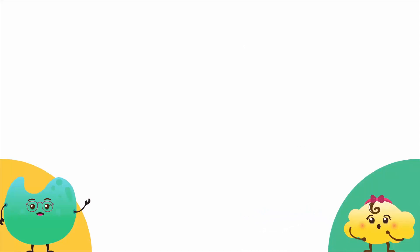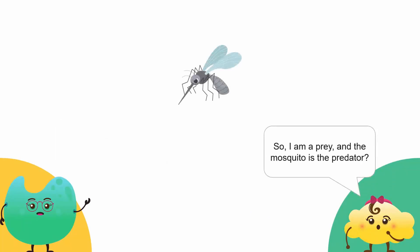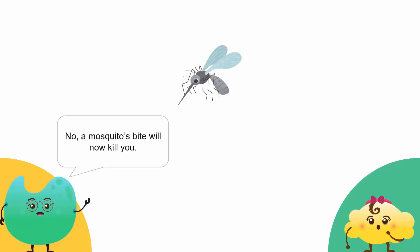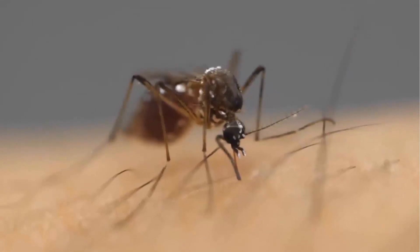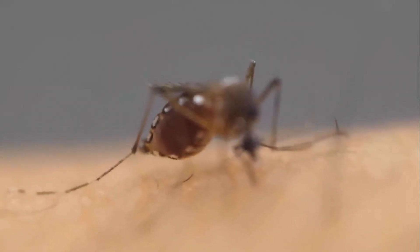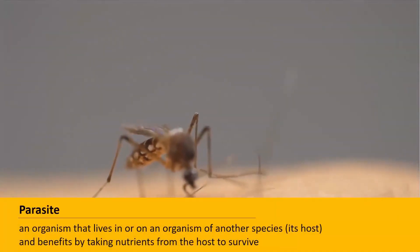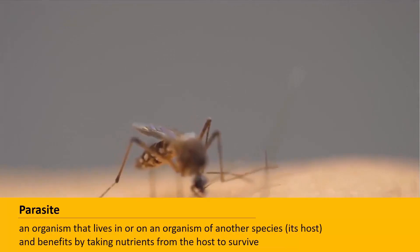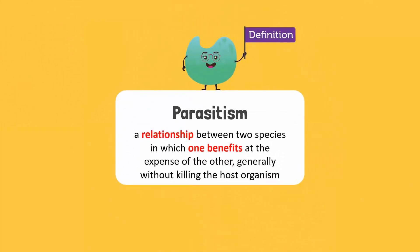I hate mosquitoes — it hurts when they bite me. You are providing food to these mosquitoes. So I am a prey and the mosquito is the predator? No, you don't die when a mosquito bites you. This is another type of relationship. Mosquitoes suck your blood to survive and also spread dangerous diseases like malaria and dengue. Such organisms are called parasites because it benefits from harming you. You are the host for these organisms as they are feeding on you. This relationship between a parasite and its host is called parasitism.